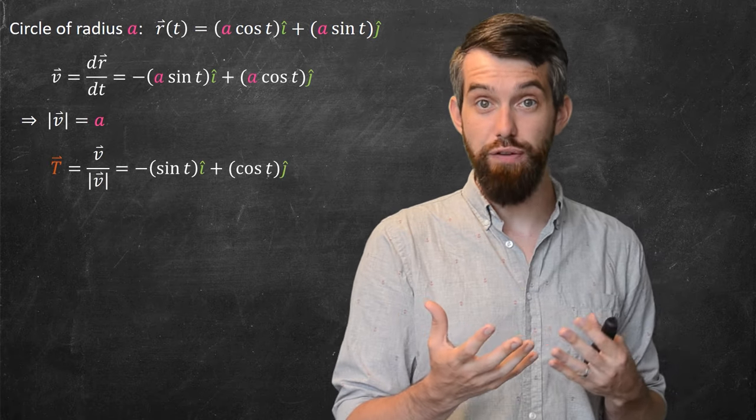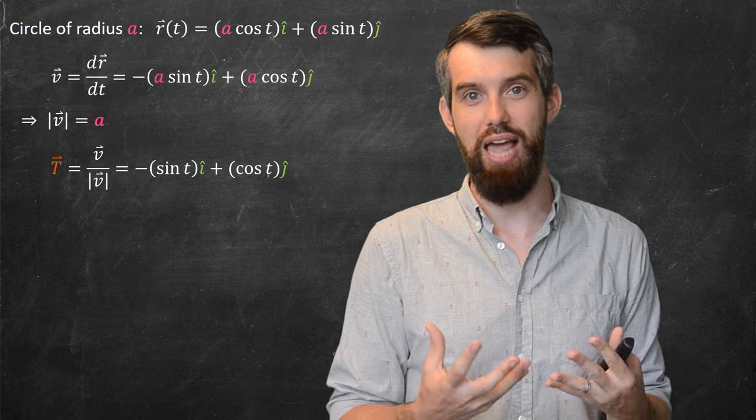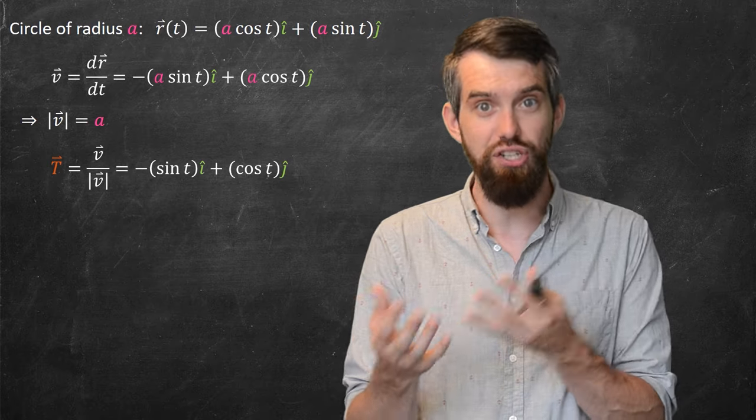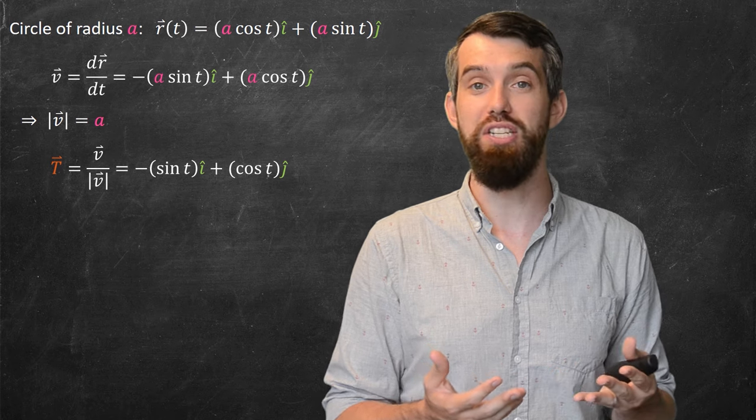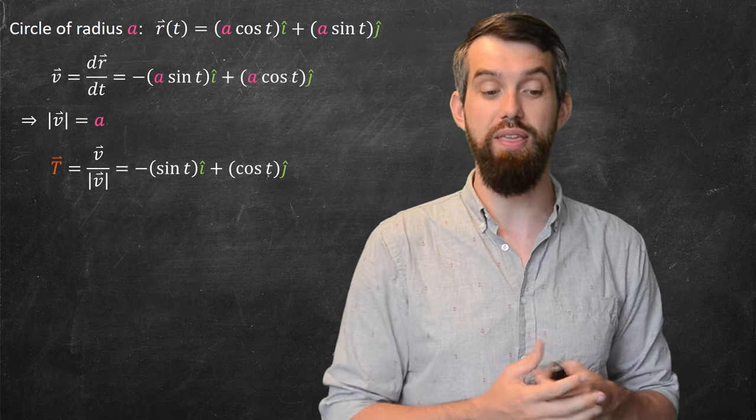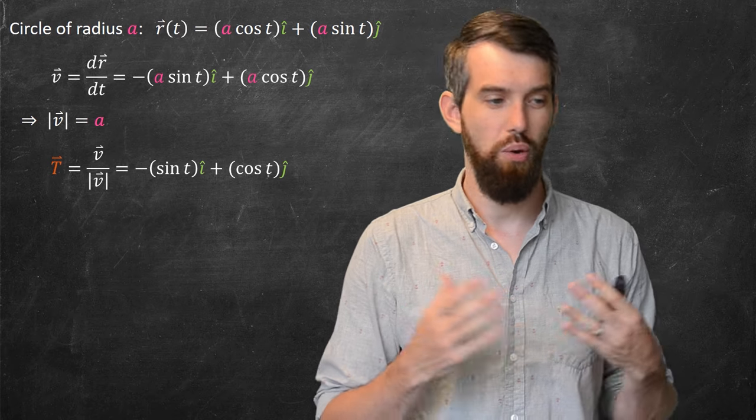Next up, the unit tangent vector, which is the velocity divided out by its length. That's the difference between the unit tangent and the velocity. They're aligned, but the unit tangent has unit length. So what do I do? I just cancel out the a here, and I get this, this minus sine of t in the i-hat and the cosine of t in the j-hat.